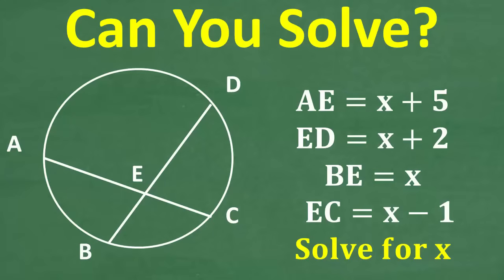So it says AE, which means the distance from A to E on this segment of this chord, is x plus 5. ED, from point E to point D, that distance is x plus 2. BE, from here to here, is x, and then from E to C, that's x minus 1. So the question is, what is x equal to?